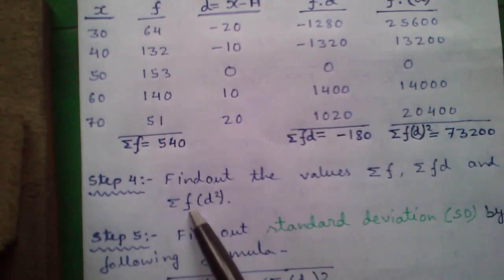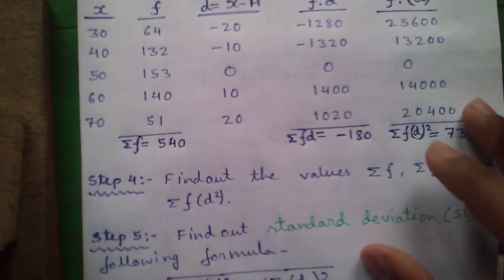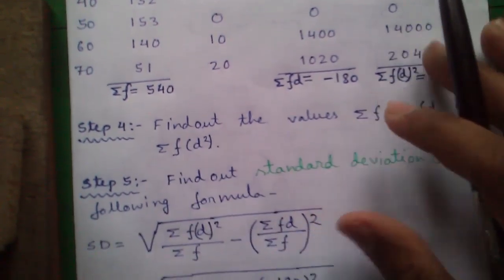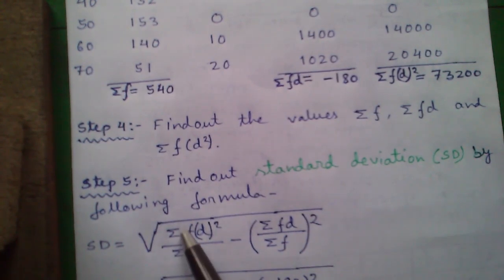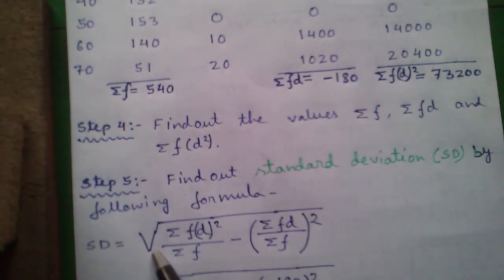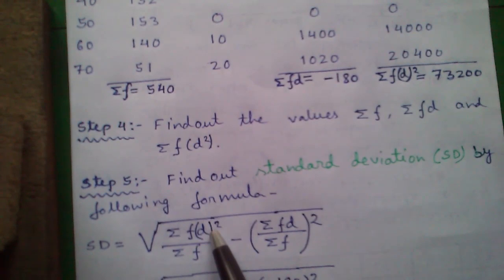Step 5. Find out standard deviation or SD by the following formula. SD equals to root over sum of F into D squared divided by sum of F minus whole square of sum of FD divided by sum of F.